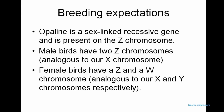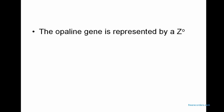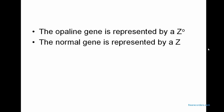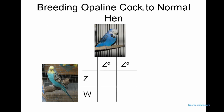The sex-linked recessive gene is on the Z chromosome. When you have a female bird, the W chromosome is shorter than the Z chromosome. So when you have that gene on that Z chromosome, it's actually unopposed by anything else — there's no other gene to oppose it on the other side, so it gets expressed. I'll represent the Opaline gene as Z with a little superscript O, and a normal gene as Z without the O.